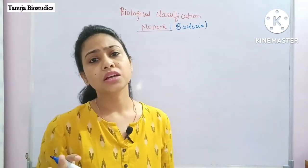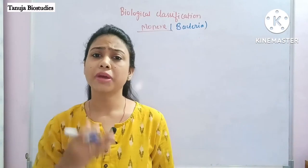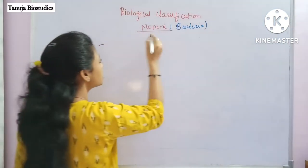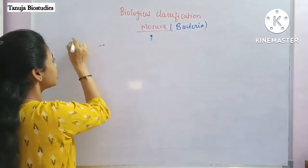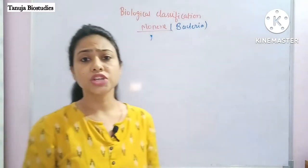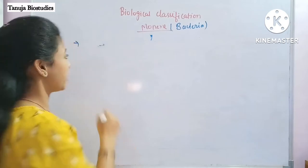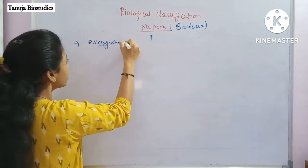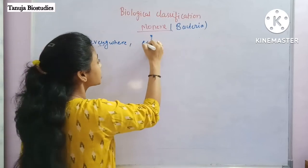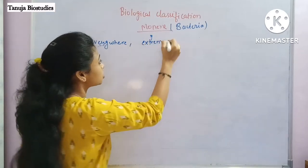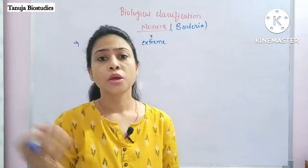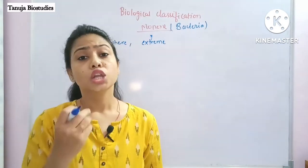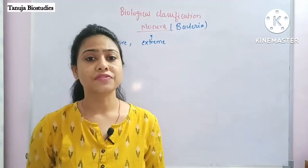Now we talk about bacteria. The basic characteristics of Monera are that they are found in all places — everywhere. They are also found in very extreme conditions, such as high temperature or high salt conditions. They survive there because they have adapted according to the environment.